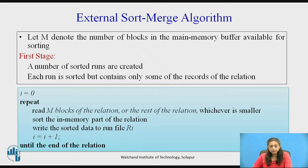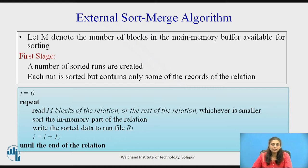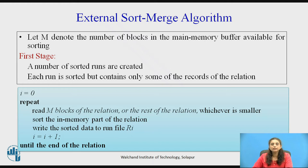Let us look at the algorithm. This algorithm works in two stages. In the first stage, the relation is divided as per the main memory space available, individual parts are sorted, and saved back to disk. In the second stage, all the sorted runs that have been generated are merged.